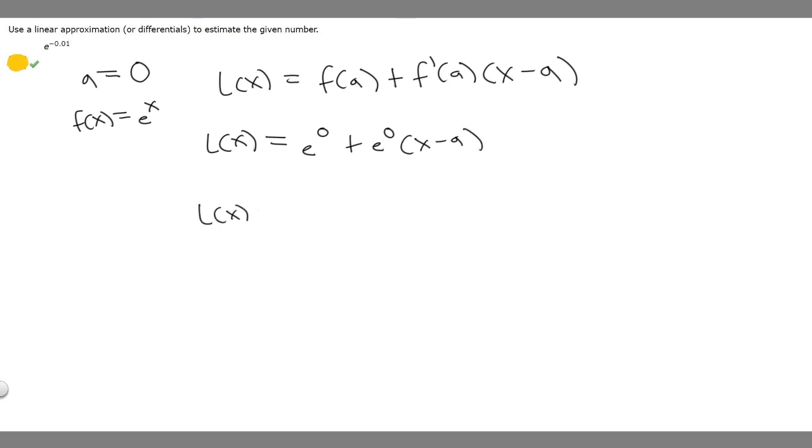So L(x) is going to equal e^0 plus e^0 times x. And then I should have replaced this with a, which is just zero. So e^0 times zero is just going to be zero. We could plus zero but it doesn't really change anything.